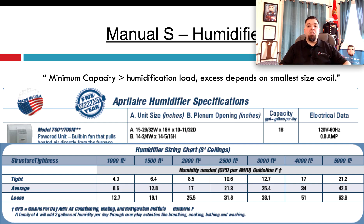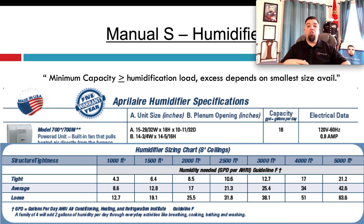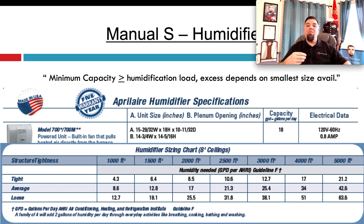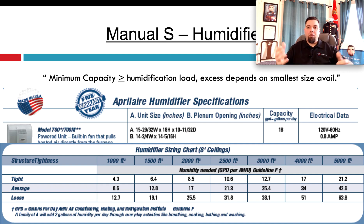In that example, we have 21.3 gallons per day needed. Keep in mind that's the total need. A family of four will add two gallons of humidity per day just through normal activity — cooking, bathing, washing, and breathing. So we subtract that two gallons from the 21.3, and we need about 19 gallons a day. I would recommend we go to the next size up for humidifier specs.